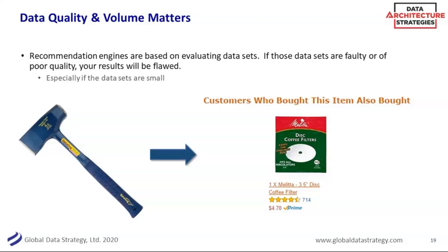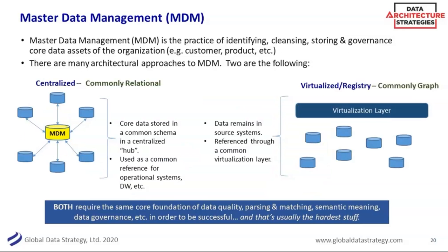Sometimes it's helpful to describe something by what it is not. I get frustrated when vendors over-promise with a technology — they have a really good technology and therefore think everything can be solved by it. That does a disservice to the really cool technologies that are offered. Just be proud of what you offer because it's cool enough. Graph is one of those — it is cool enough, it just isn't everything.